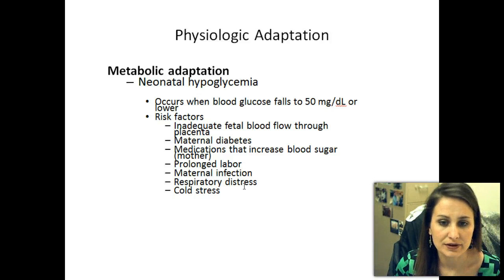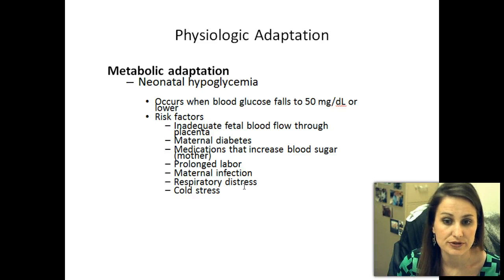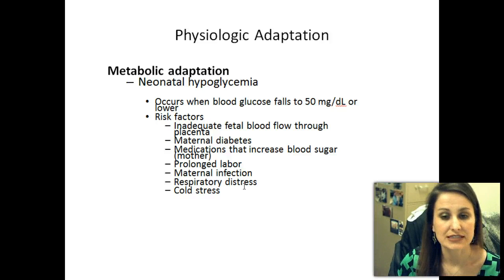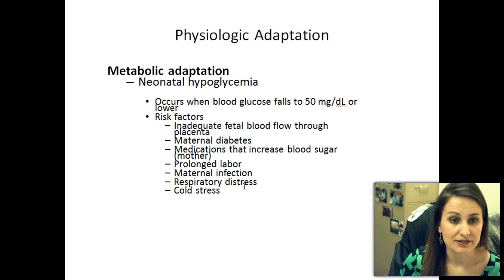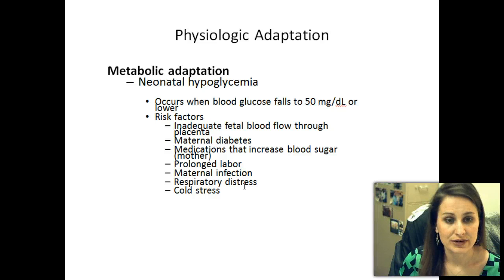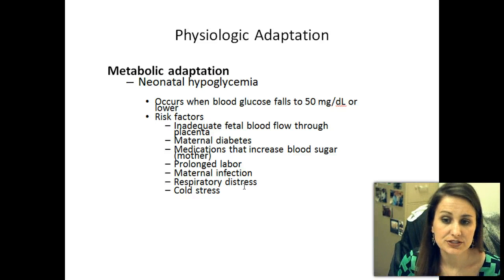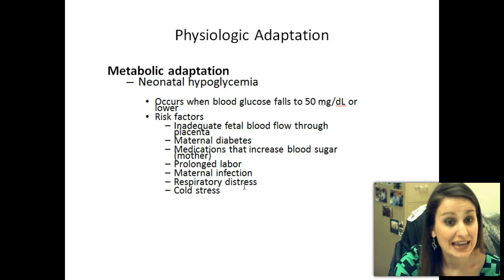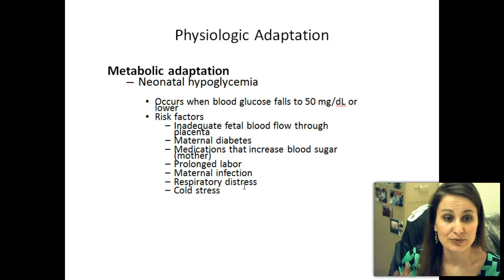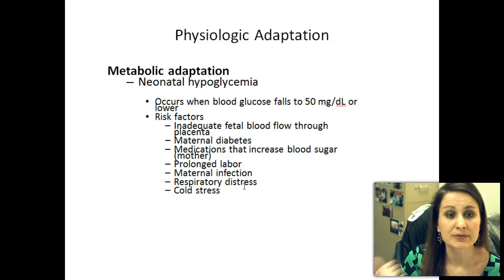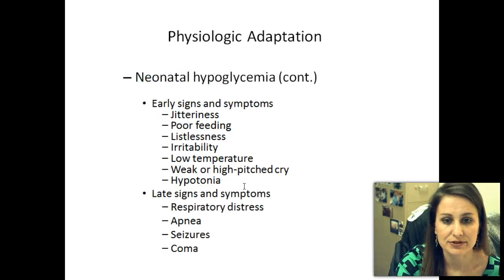Some risk factors for neonatal hypoglycemia include inadequate fetal blood flow through the placenta — for whatever reason that placenta was not getting the baby adequate nutrients. Maternal diabetes: if the mom has high blood sugars throughout the pregnancy, the baby gets used to that, and when that supply is cut off, the baby's blood sugar can drop really quickly. Other factors include medications that can increase blood sugar taken by the mother, prolonged labor, any kind of stress to that baby, maternal infection, respiratory distress, and cold stress. If the baby's in respiratory distress, we watch its blood sugar as well. We have to keep those babies warm.